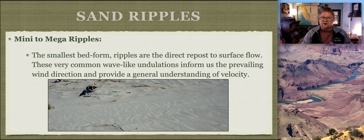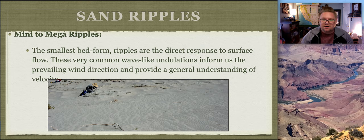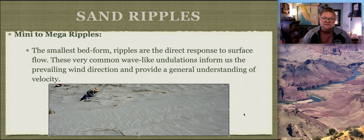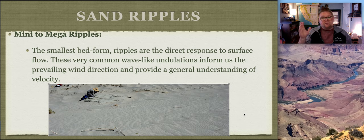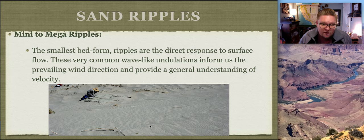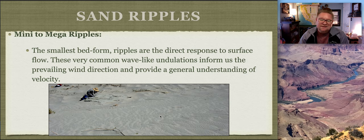Sand ripples are one of the smallest bedforms - a direct response to surface flow. These very common wave-like undulations inform us of the prevailing wind direction and provide a general understanding of velocity, because larger velocity creates greater ripples. What we see here are definite ripples, with larger lines indicating mega ripples and many smaller ripples within, implying the area doesn't have consistent velocity - getting both large and small winds.